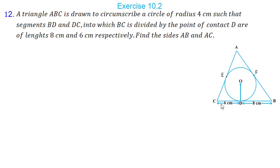CD is 6, so CE will also be 6 because they are tangent lengths. BD is 8, so BF is also 8. Now for length AC, I know CE, so we have to find AE. AE and AF are equal, so I will consider them as X. AE and AF, their value is X.